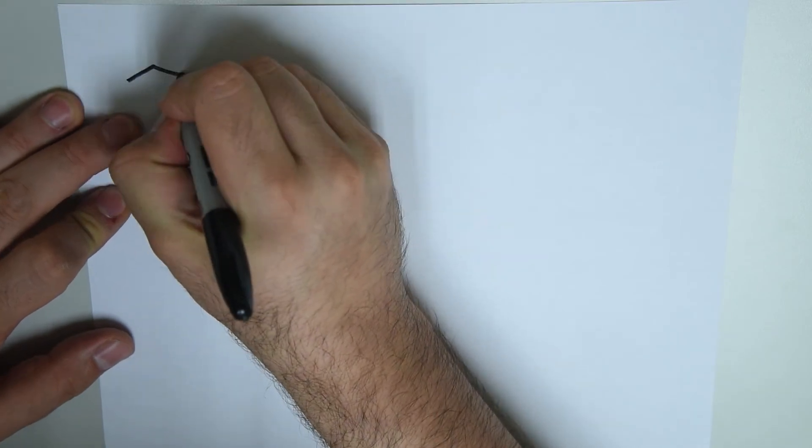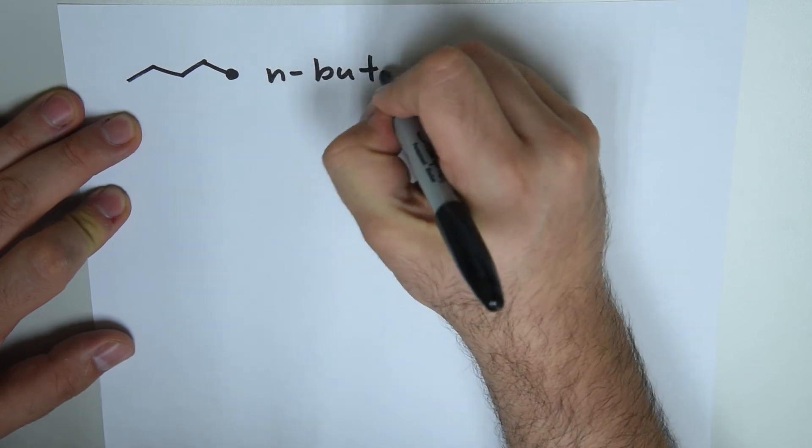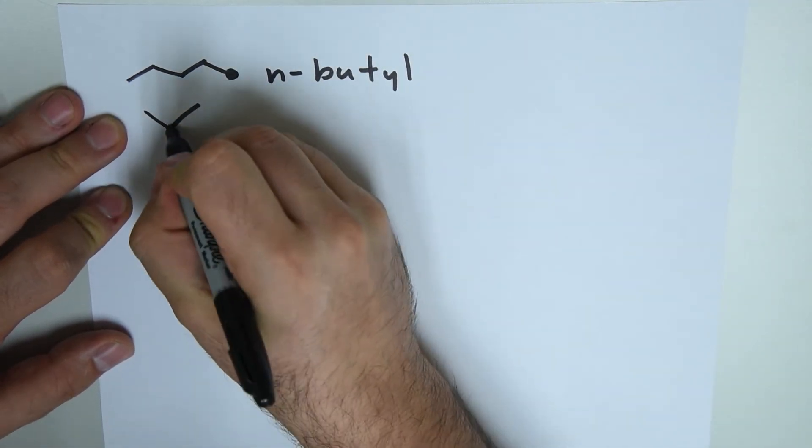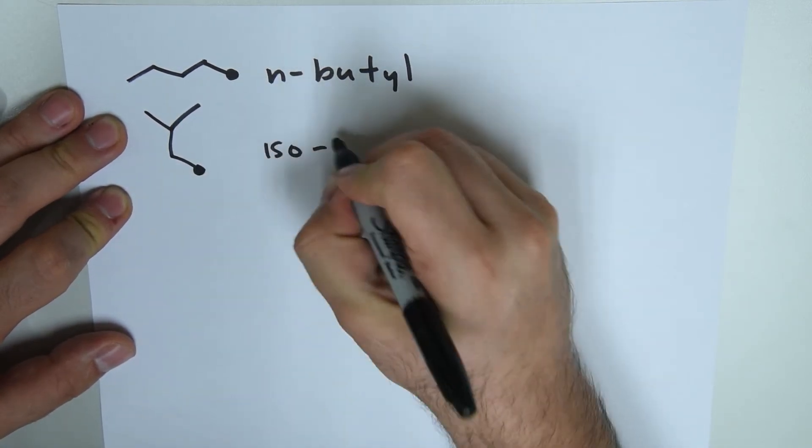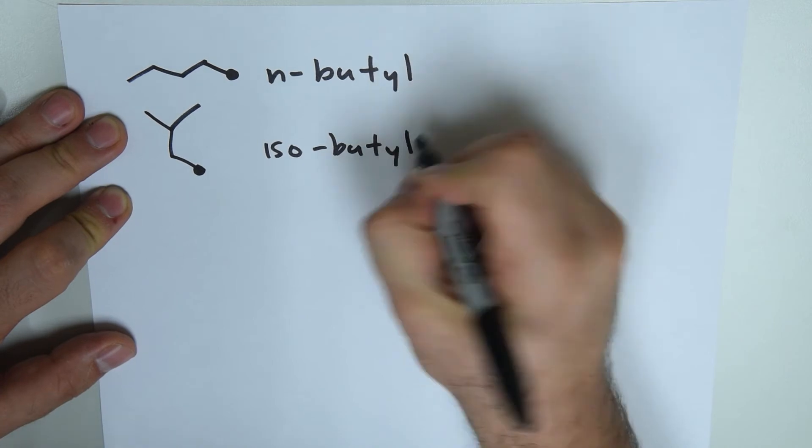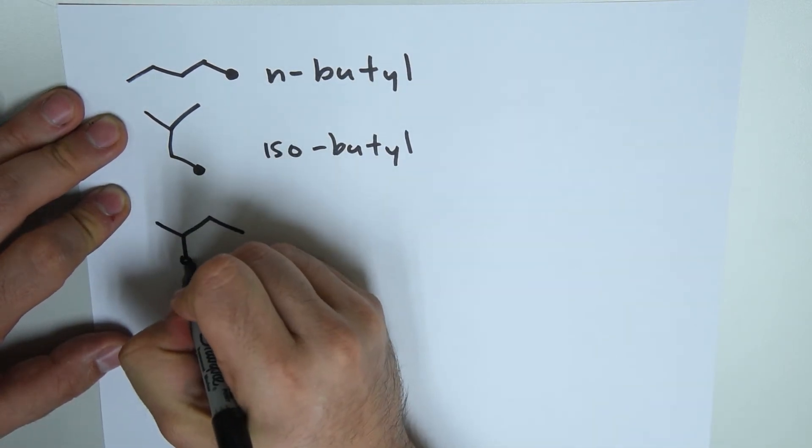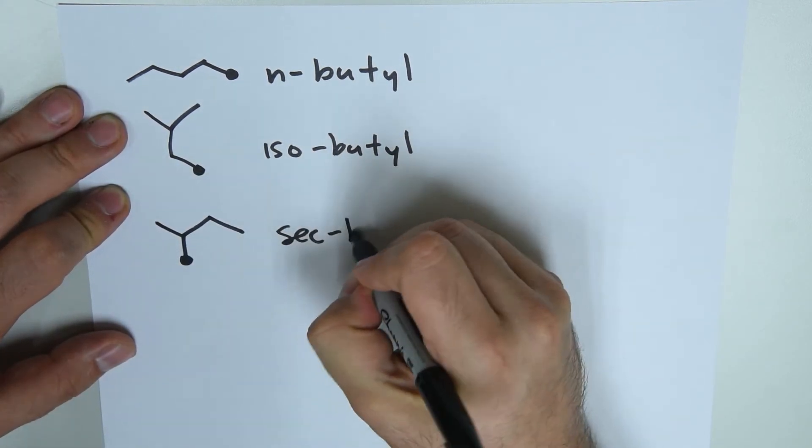As we keep on adding more carbons to the chain, we have more shapes that appear. For example, again, straight chain with four, this would be n-butyl. The same chain ending in an antenna: one, two, three, four, and another one ending in my antenna, isobutyl. If we have the straight chain but we're attaching at the secondary carbon, we have sec-butyl.